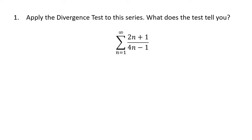We'll start with the divergence test. What the divergence test tells us is that if we look at the numbers that we're adding up in a series — the big sigma means we're adding up terms that look like this formula — we look at what those terms go to by themselves. If the limit as n goes to infinity of those terms is anything other than 0, then the series diverges. But if this limit is 0, the test is inconclusive; the limit has to be 0 for the series to even have a chance of converging.